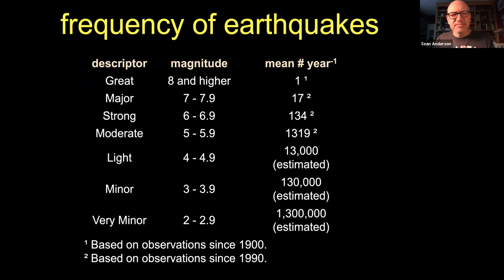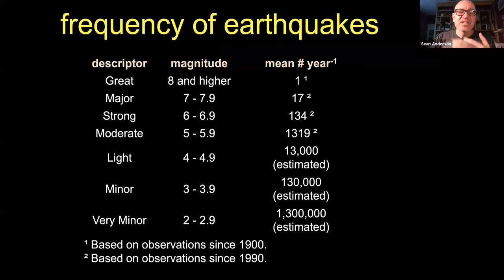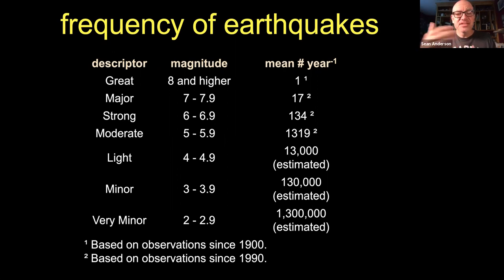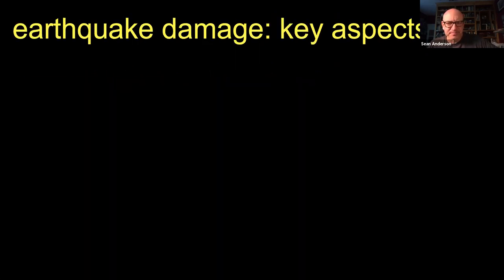Any earthquake could theoretically cause a problem — even a small one could make you fall and suffer a concussion. But clearly as we go up in magnitude, the likelihood of disasters affecting larger swaths of the population increases significantly. We really start worrying when we get into the fives and sixes and sevens. By the time we get up to magnitude 8, it's catastrophic, end-of-the-world type stuff.